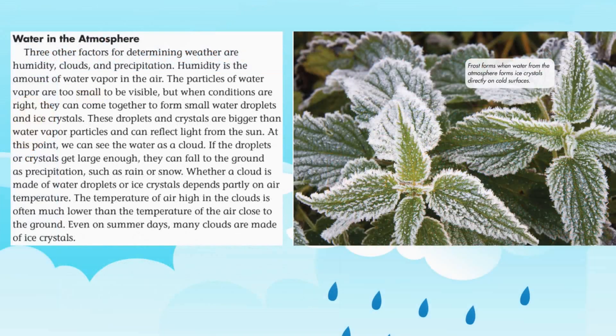Water in the atmosphere: three other factors for determining weather are humidity, clouds, and precipitation. Humidity is the amount of water vapor in the air. Water vapor particles are too small to be visible, but when conditions are right they come together to form small water droplets and ice crystals. These droplets and crystals can reflect light from the sun — at this point we can see the water as a cloud. If the droplets or crystals get large enough, they fall to the ground as precipitation such as rain or snow.